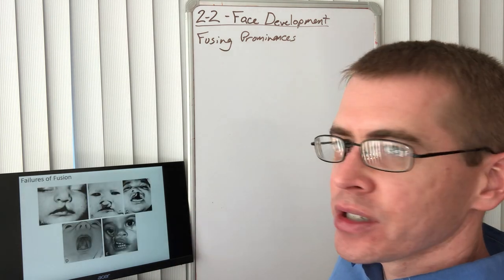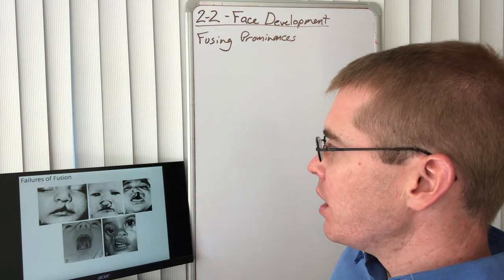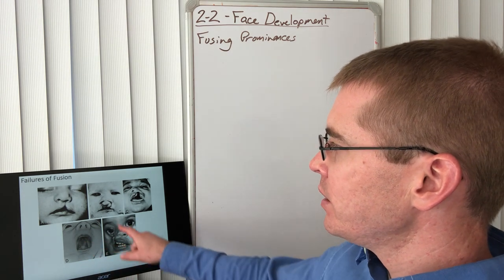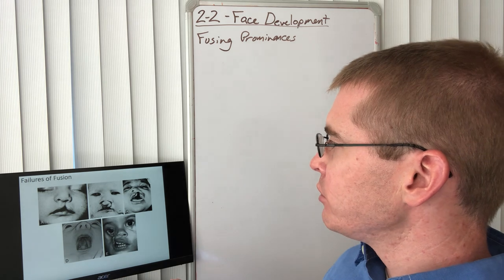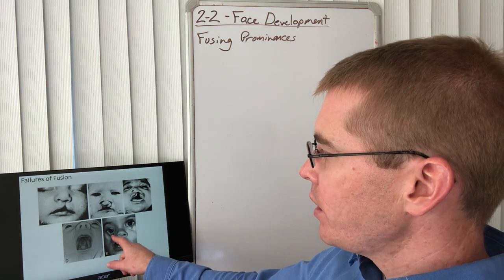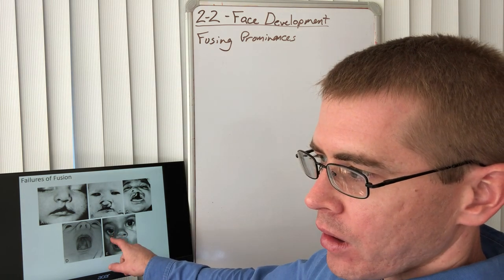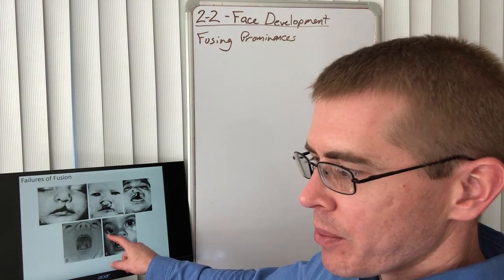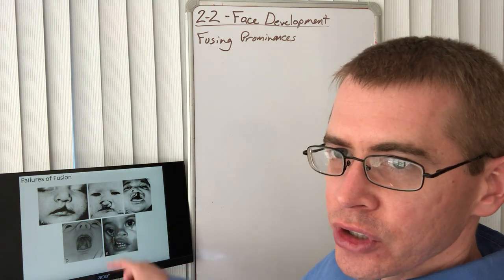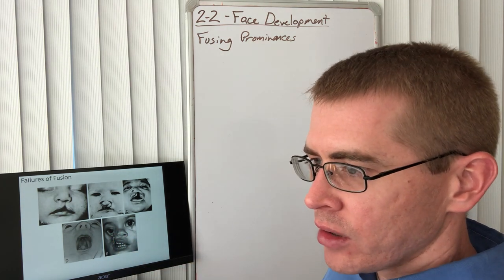These are all variations on that process. Here we can see example images of these different failures in fusion, the cleft palate here, the bilateral cleft lip. And here we actually see where the maxillary prominence and the nasal prominences did not completely fuse here. We have that opening to the nasolacrimal duct.